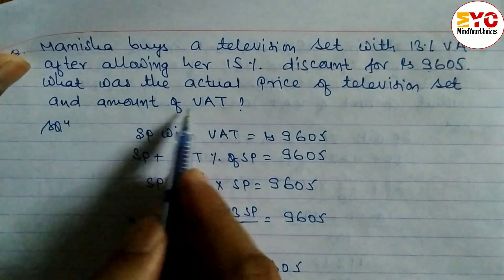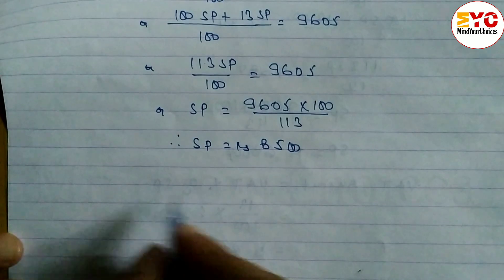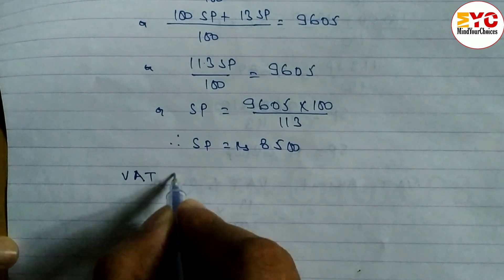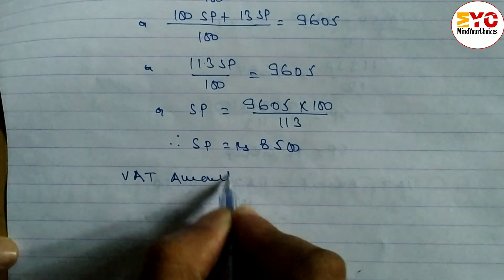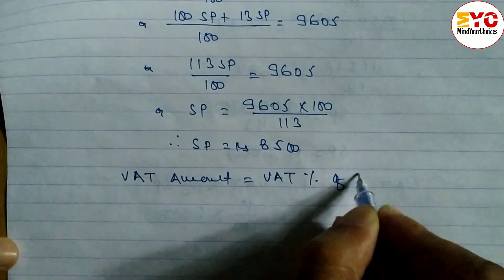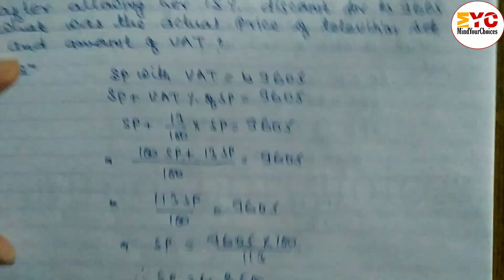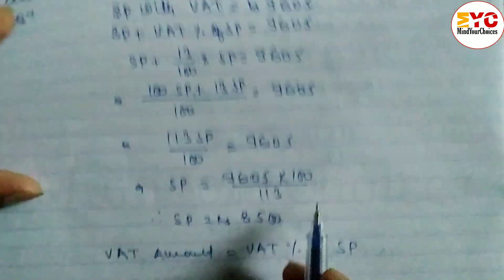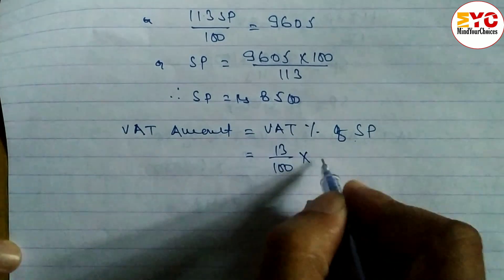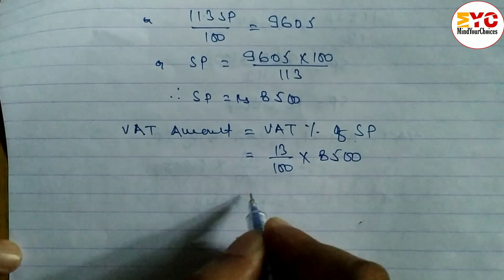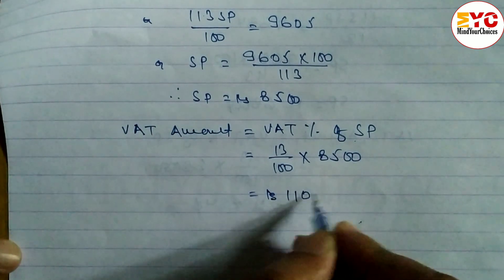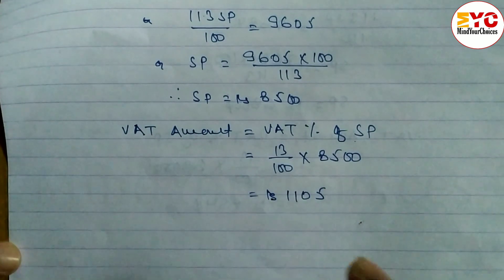Now let's find the amount of VAT. The formula for VAT amount is: VAT percent of SP. VAT percent is 13%, so: 13 divided by 100 into SP, where SP is 8500. Calculating, we get rupees 1105 as the VAT amount.